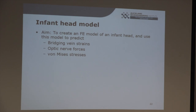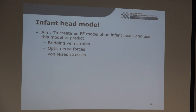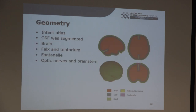The final part of my thesis was to apply those computational techniques and create an infant head model. The main aim was to create an FE model of an infant head and use it to predict strains in the bridging veins, optic nerve forces, and von Mises stresses. The bridging vein strains would give an indication of whether they would rupture — indicating if subdural hematomas would occur. The optic nerve forces were hypothesised to indicate whether retinal hematomas would occur. The von Mises stresses indicated whether traumatic brain injury would occur.